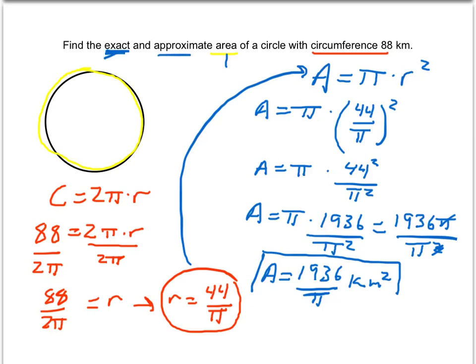We also need an approximate answer. So if you type that into your calculator, 1,936 divided by π is approximately 616.248 square kilometers.